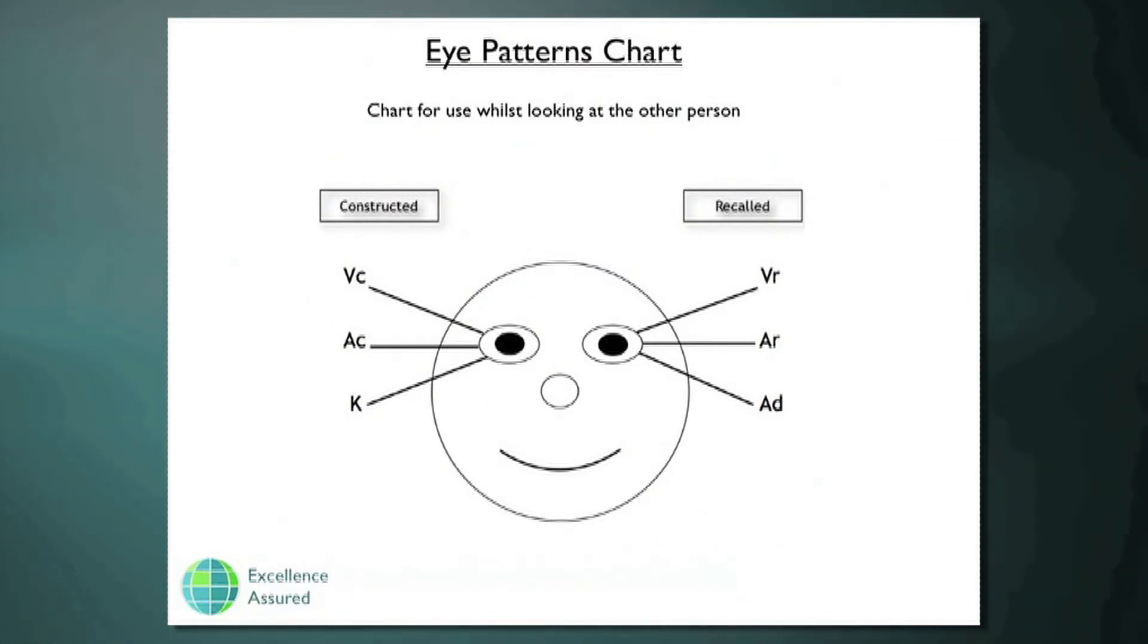So let's look at the page now. The left-hand side of the chart is constructed, and the right-hand side is recalled. So top left is visual construct, and visual recall on the right as you look at the person.